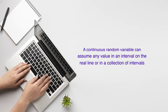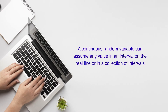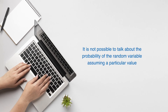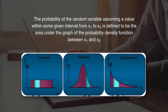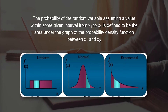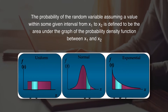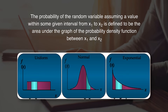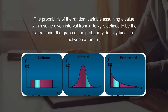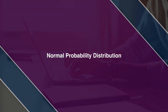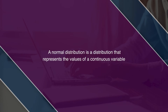A continuous distribution variable can assume any value in an interval on the real number line or in a collection of intervals. It is not possible to talk about the probability of the random variable assuming a particular value; instead, we talk about the probability assuming a value within a given interval. The probability from x1 to x2 is defined as the area under the graph of the probability density function between x1 and x2. The uniform figure is flat, the normal figure is bell-shaped, and the exponential figure follows an exponential curve.